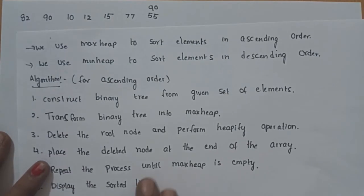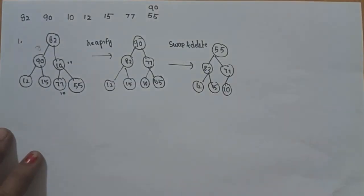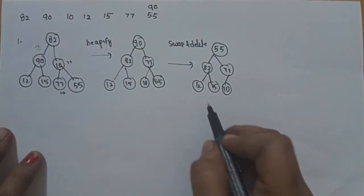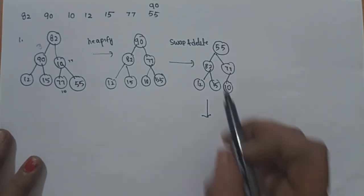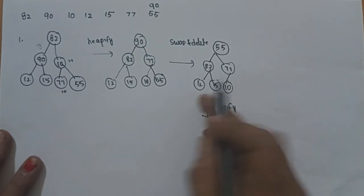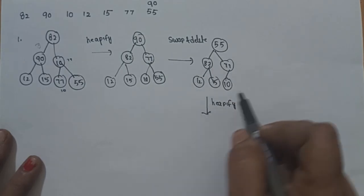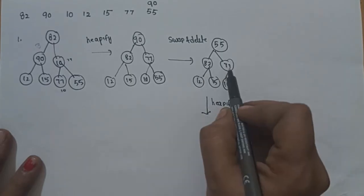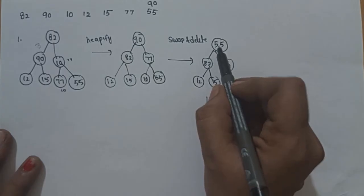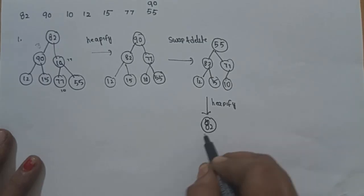Repeat the process until the max heap is empty. After deleting 90, the max heap property is not satisfied with 55 as root. We check: 82 is greater than 55, and between 82 and 77, 82 is greater. The root node 55 is less than 82, so to satisfy the max heap property, we swap 82 with 55.